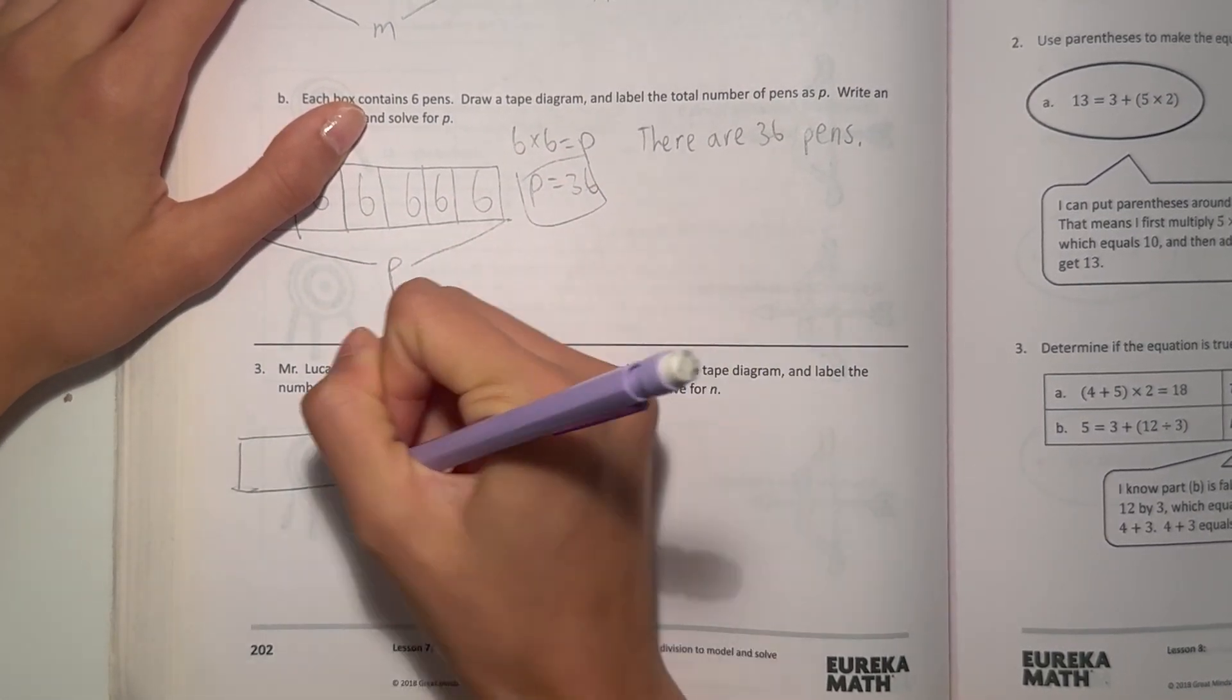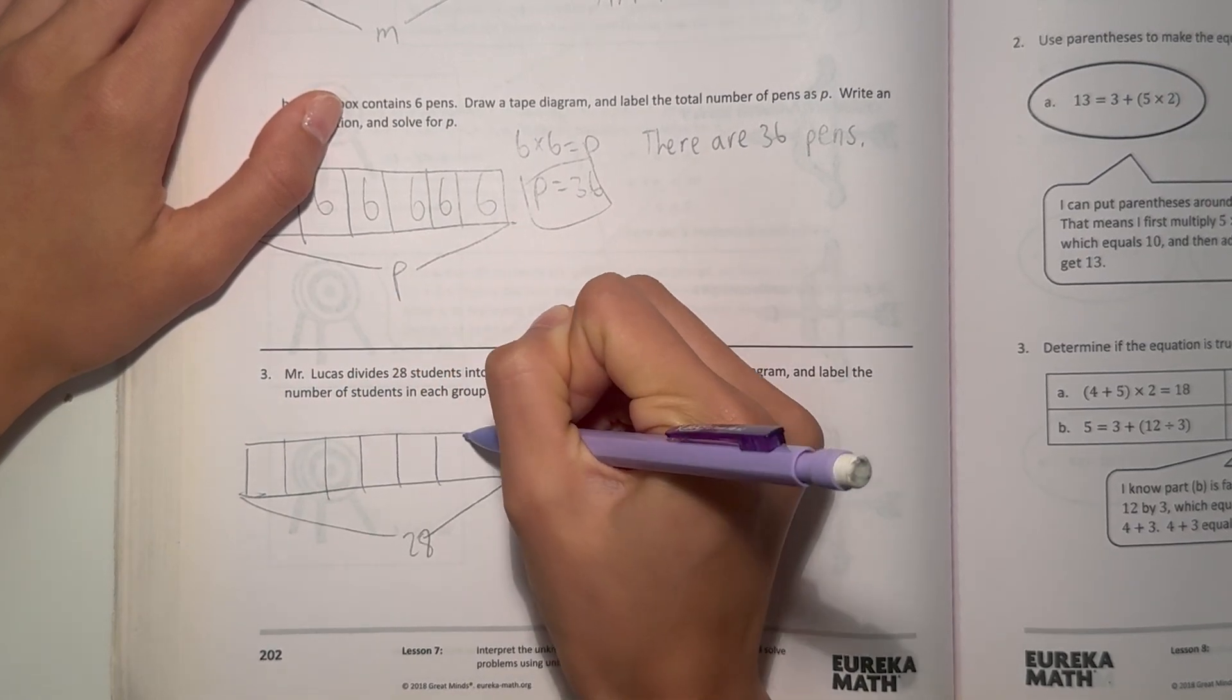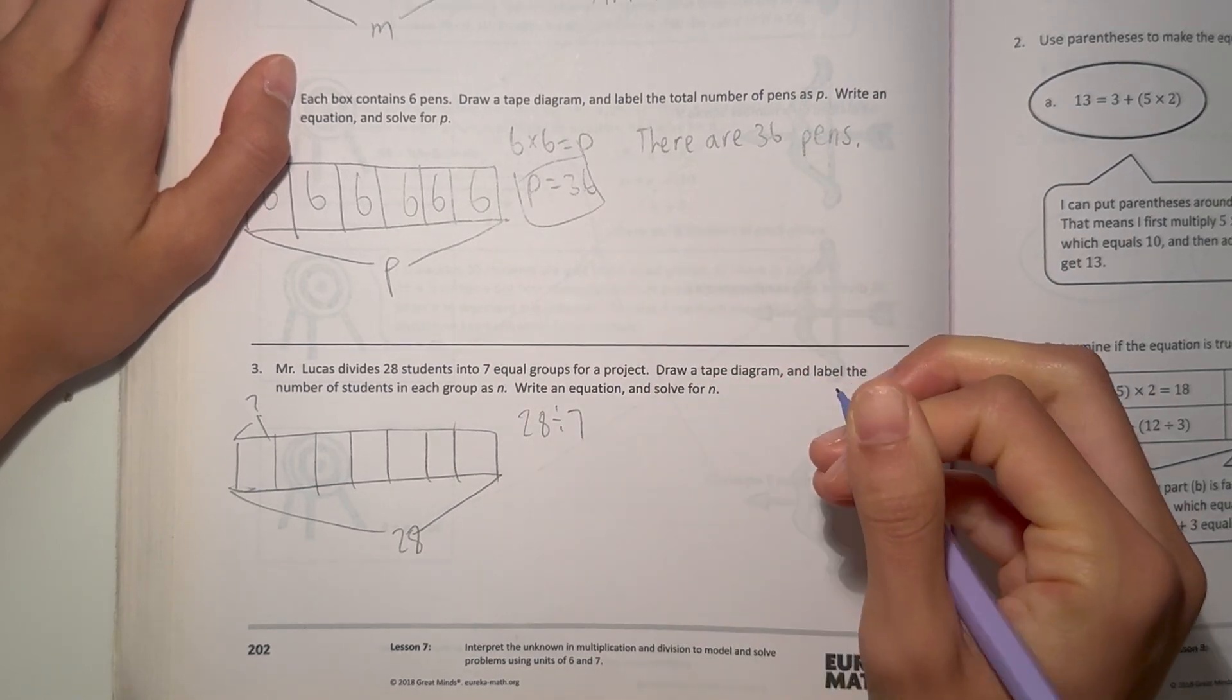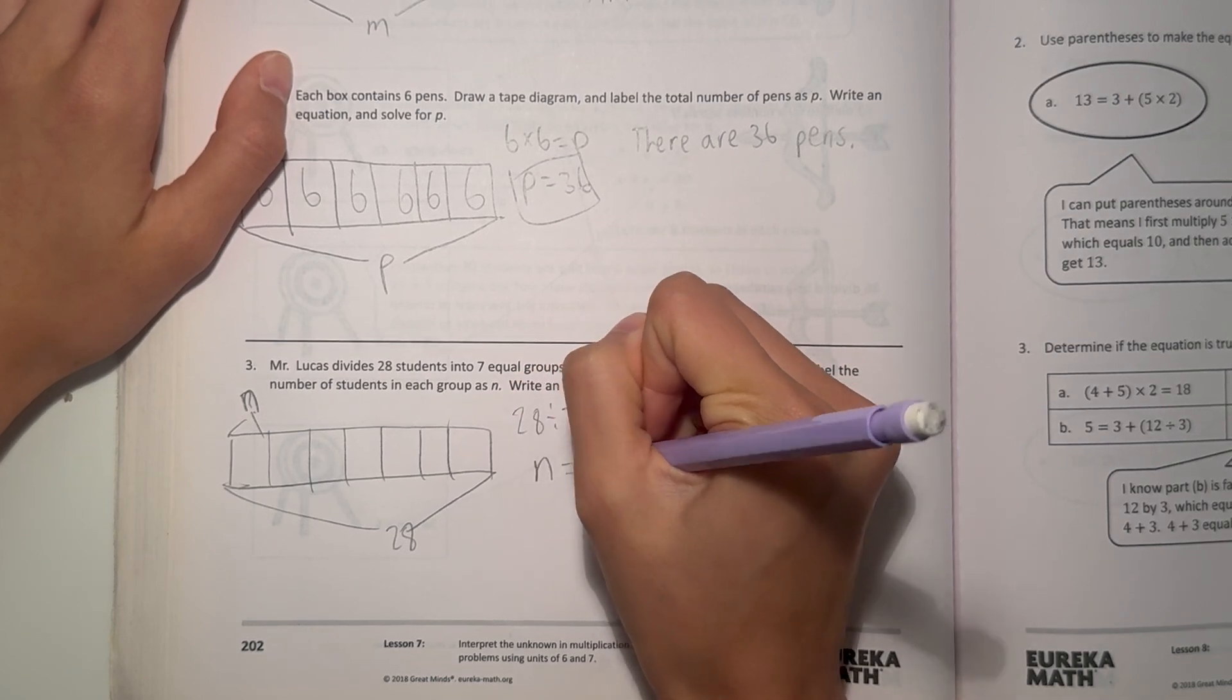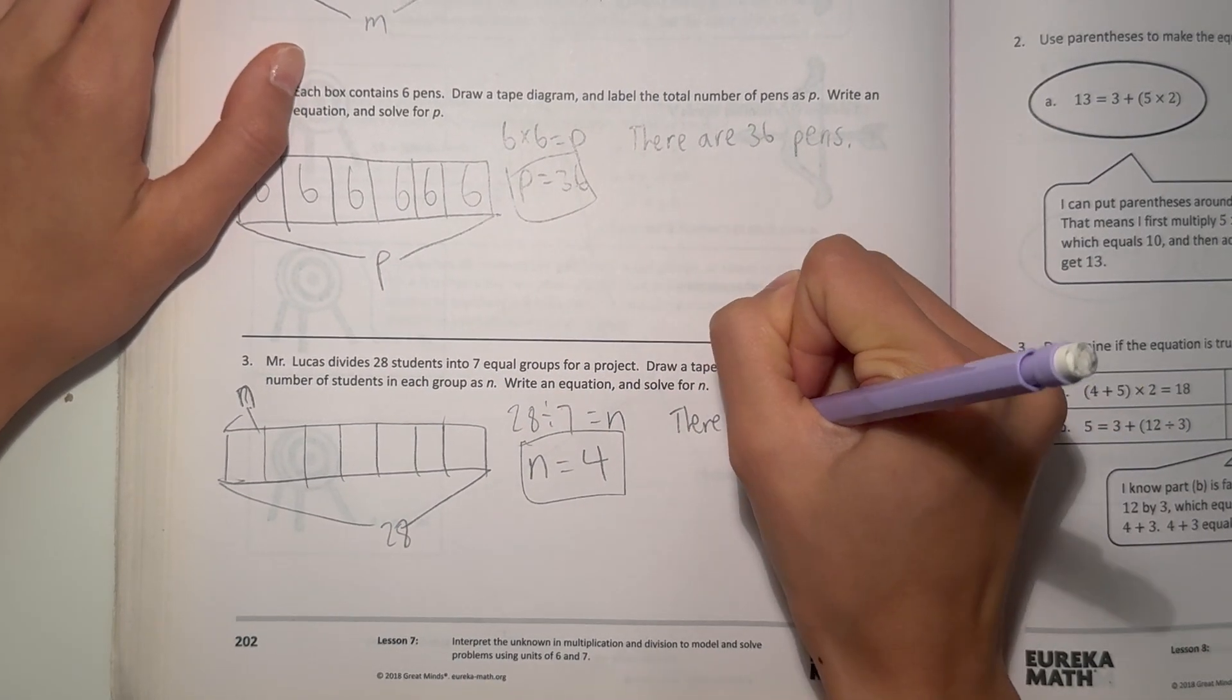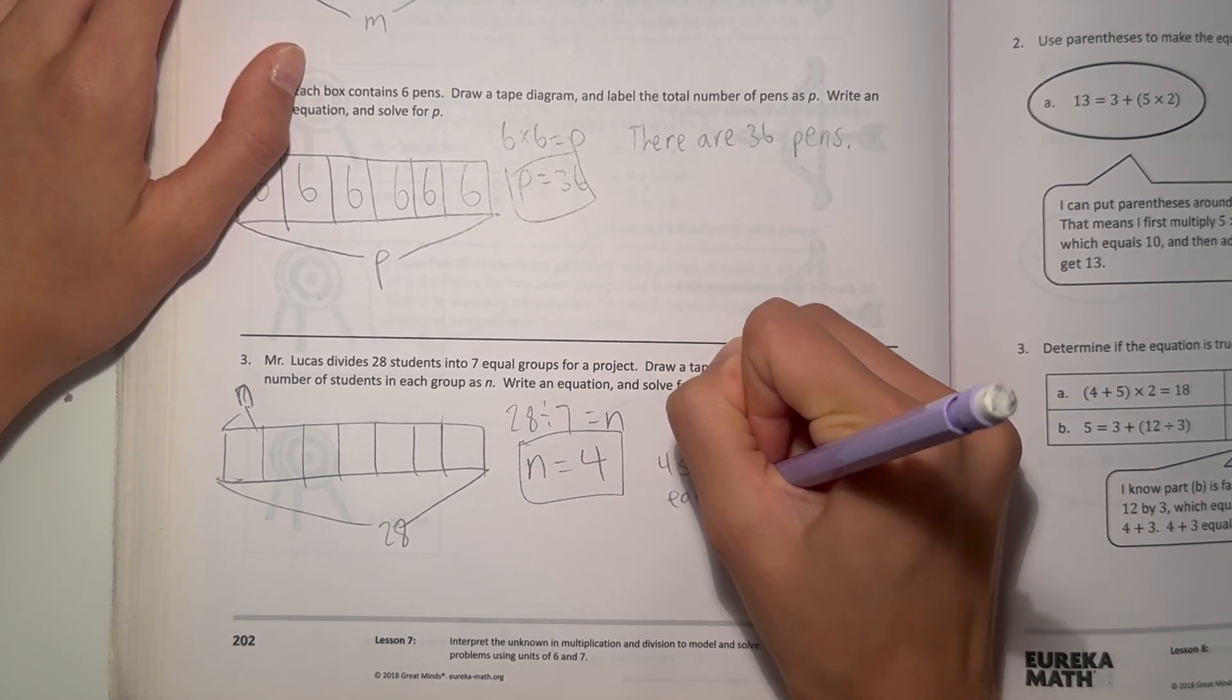So our total is 28 students. And there's 7 equal groups. But we want to find out how many are in each group. So what we do is we do 28 divided by 7. This is N. And that will give us N. So then N equals 4 because 28 divided by 7 is 4. So there are 4 students in each group.